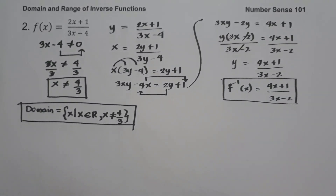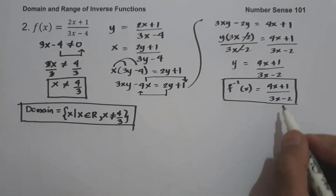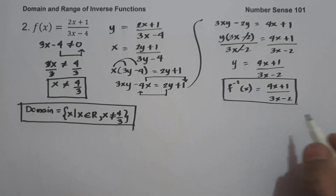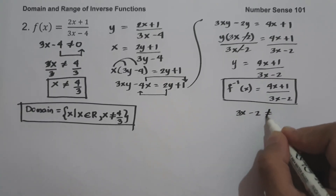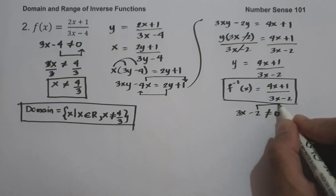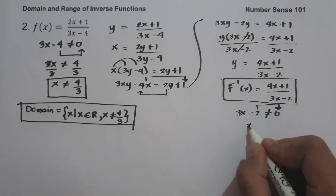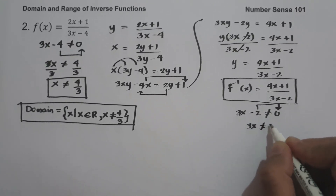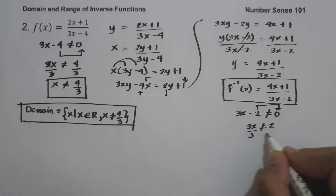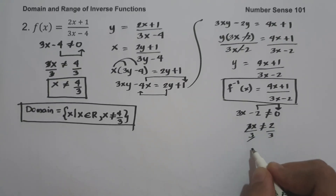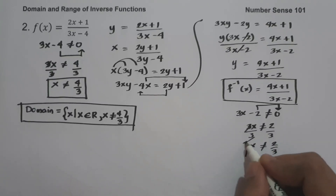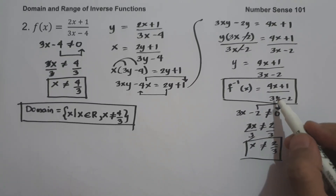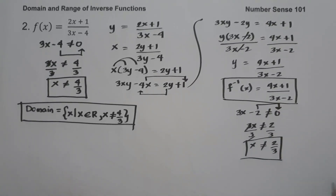To find the domain of the inverse function, we equate the denominator not equal to 0: 3x minus 2 not equal to 0. Moving negative 2 gives 3x not equal to 2. Dividing both sides by 3, we get x not equal to 2 over 3. Substituting this into the inverse function gives undefined.